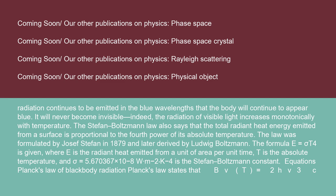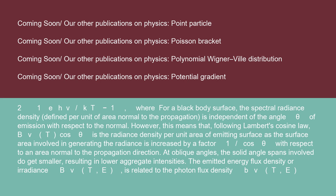Planck's Law of Blackbody Radiation states that B(ν, T) = (2hν³/c²) · 1/(e^(hν/kT) − 1), where for a blackbody surface the spectral radiance density, defined per unit of area normal to the propagation, is independent of the angle θ of emission with respect to the normal. However, this means that following Lambert's cosine law, B(ν,T)·cosθ is the radiance density per unit area of emitting surface, as the surface area involved in generating the radiance is increased by a factor 1/cosθ with respect to an area normal to the propagation direction. At oblique angles, the solid angle spans involved do get smaller, resulting in lower aggregate intensities.